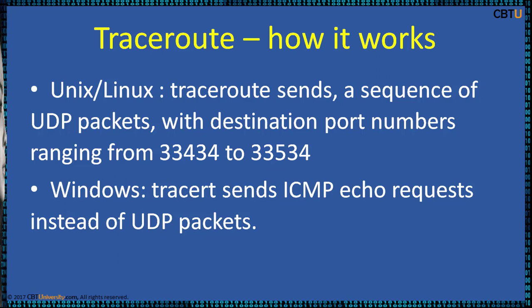How Traceroute works: In Unix and Linux, traceroute sends a sequence of UDP packets with destination port numbers ranging from 33,434 to 33,534. In Windows, tracert sends ICMP echo requests instead of UDP packets. The Time to Live (TTL) value, also known as hop limit, determines the intermediate routers being traversed. Traceroute sends packets with TTL values that gradually increase starting from 1. Routers decrement the TTL by 1 and discard packets whose TTL reaches 0, returning an ICMP time exceeded error message.